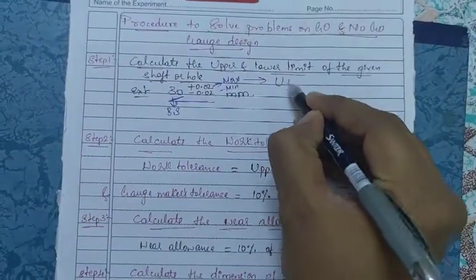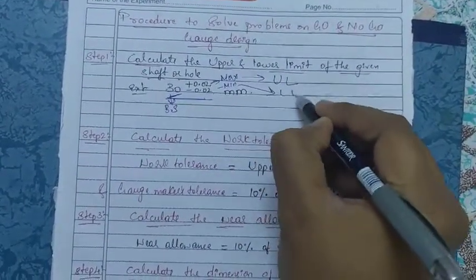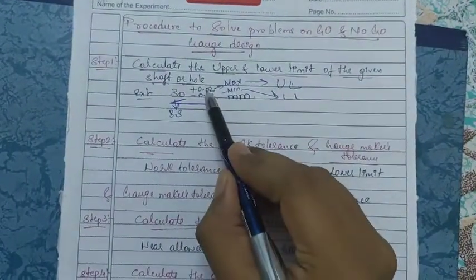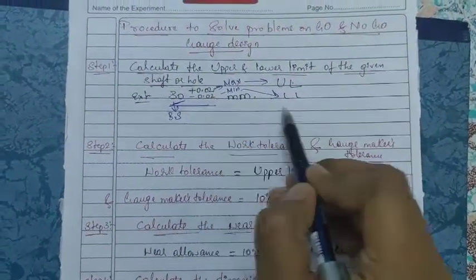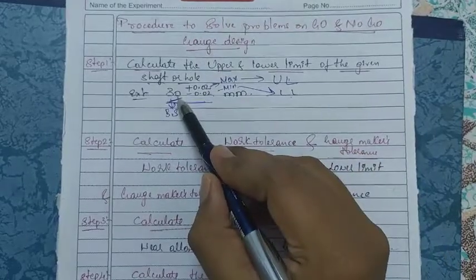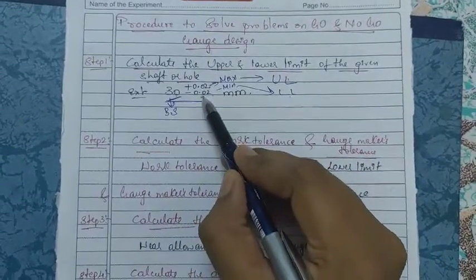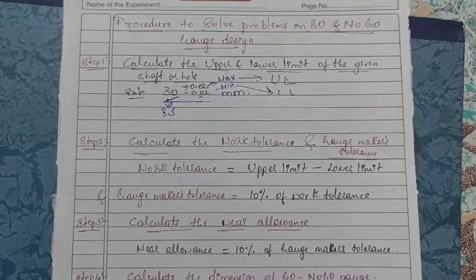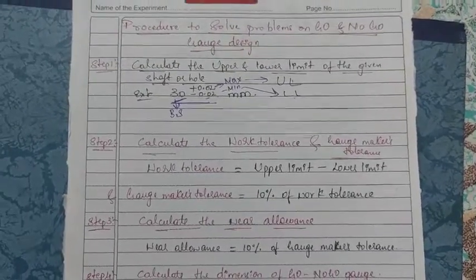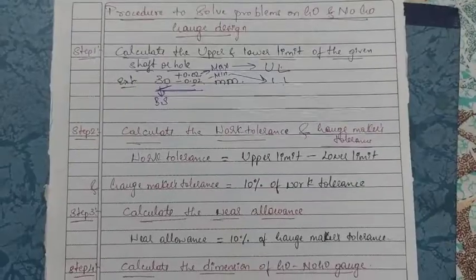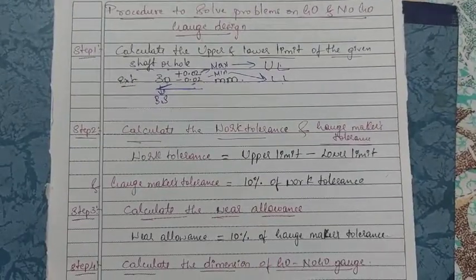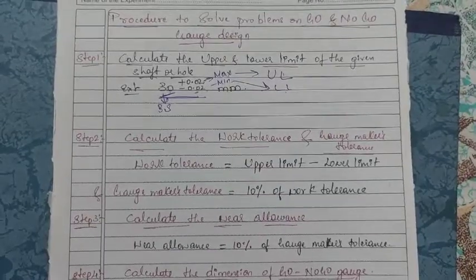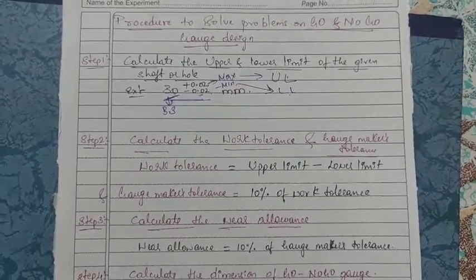So maximum means upper limit and minimum means lower limit. The upper limit is equal to basic size plus the maximum deviation, and the lower limit is equal to basic size minus the minimum deviation. That is Step 1. If the diameter is given with the type of hole and shaft, the upper and lower limits can be calculated the same as in problems related to limits, fits, and tolerance.